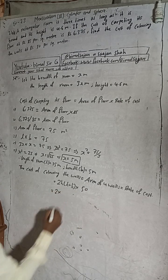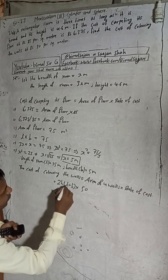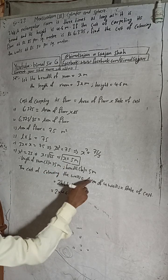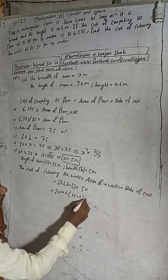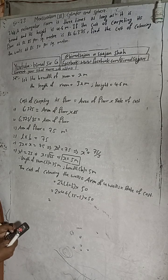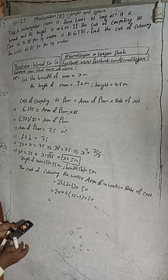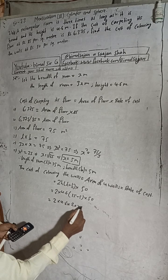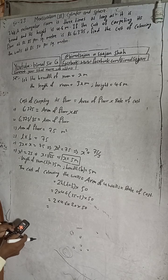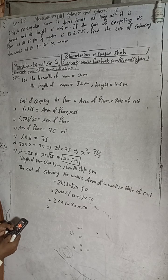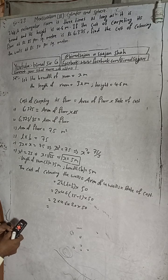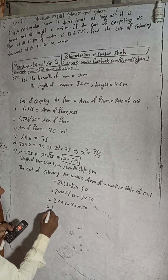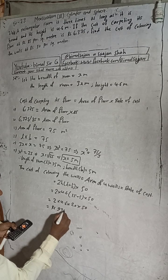Putting in the values: 2 into height 4.6, into L which is 15, plus B which is 5, so 15 plus 5 equals 20, into rate 50. So 2 into 4.6 into 20 into 50 gives us 9,200. The cost of colouring the walls is 9,200 rupees.